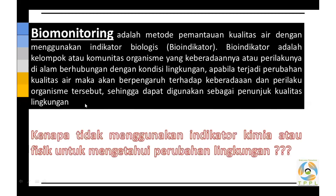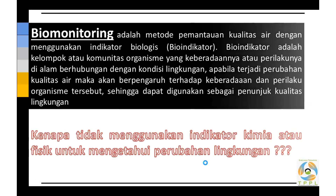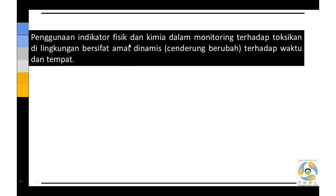Kenapa tidak menggunakan indikator kimia atau fisik untuk mengetahui perubahan lingkungan? Penggunaan indikator fisik atau kimia dalam monitoring terhadap toksikan di lingkungan bersifat sangat dinamis, artinya selalu berubah terhadap waktu dan tempat. Toksikan atau toksik merupakan zat beracun yang tidak diproduksi di dalam organisme hidup. Berbeda dengan toksin, yaitu zat beracun yang diproduksi di dalam sel atau organisme hidup.